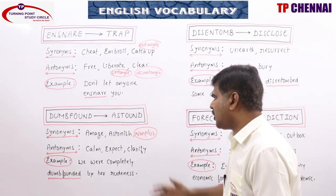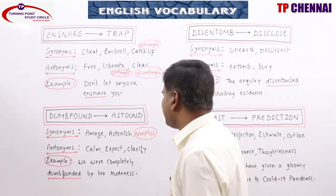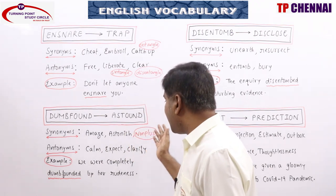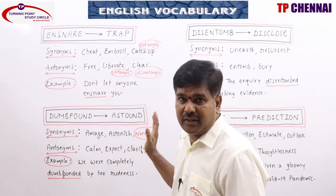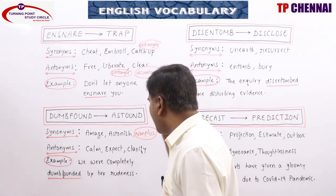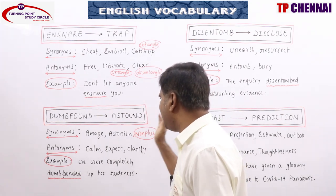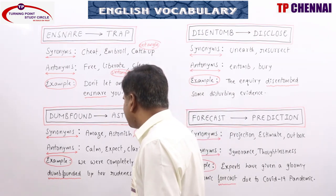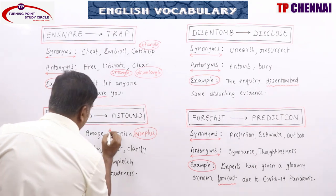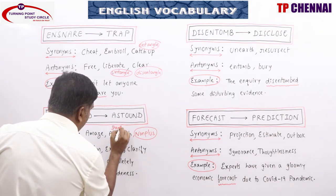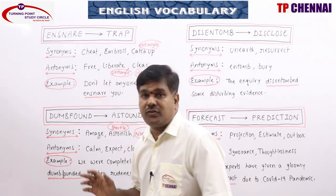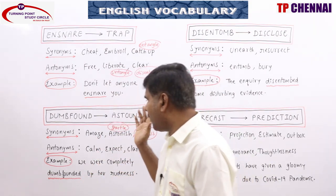Dumbfound means astound — very much surprising, amazed, astonished, nonplus (n-o-n-p-l-u-s). Also: puzzled, perplexed, bewildered, startled (s-t-a-r-t-l-e), stunned, flabbergast. So dumbfound means surprised and confused.